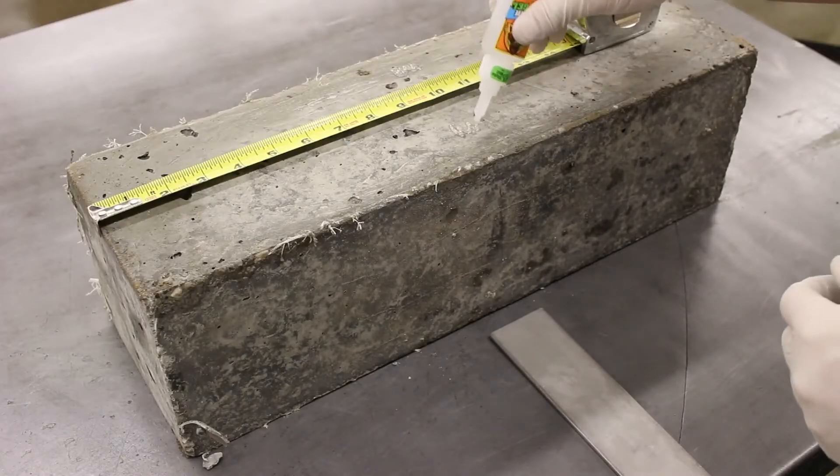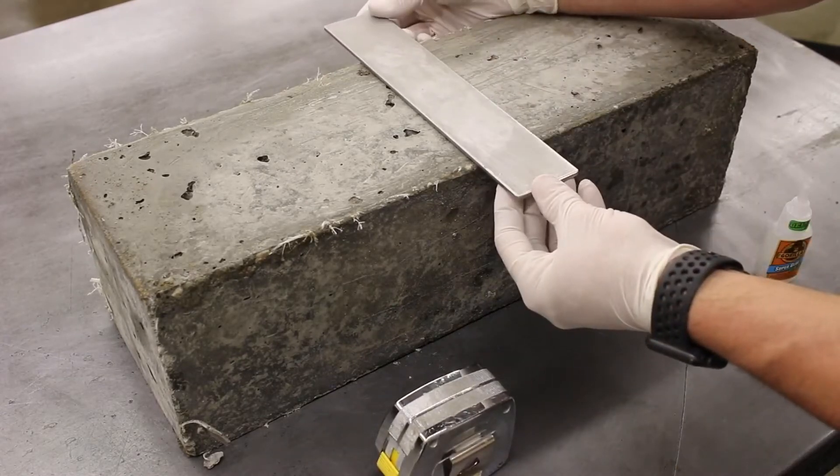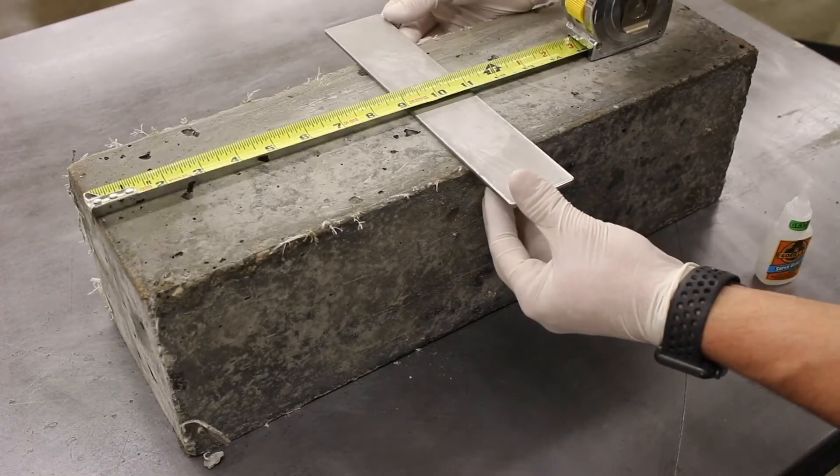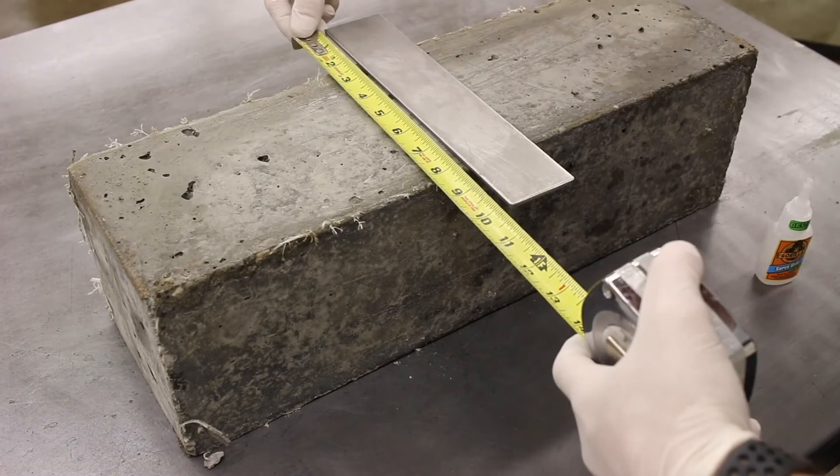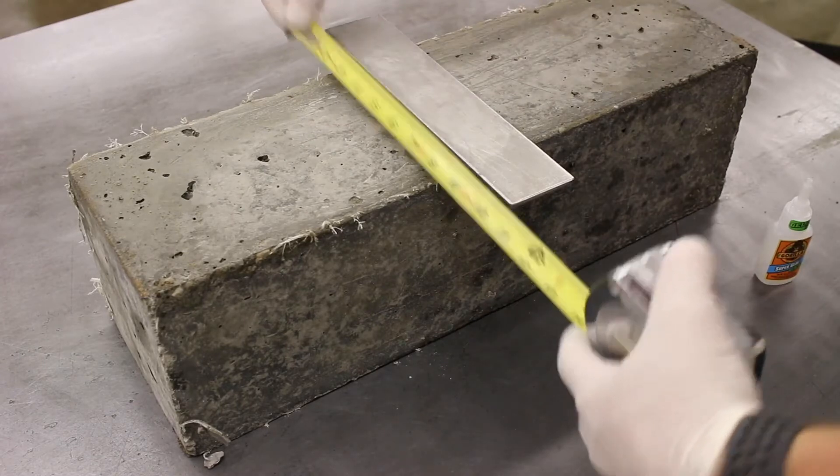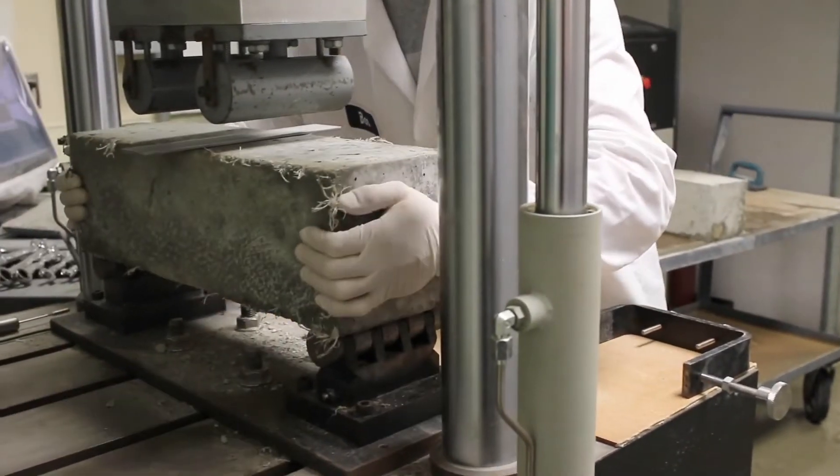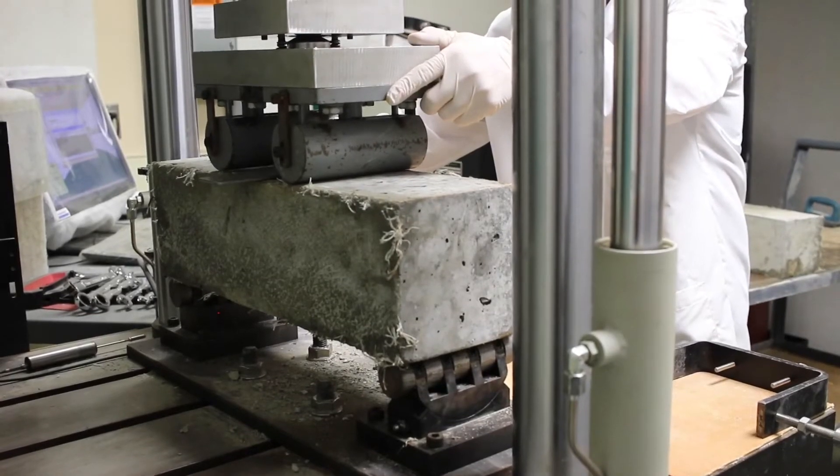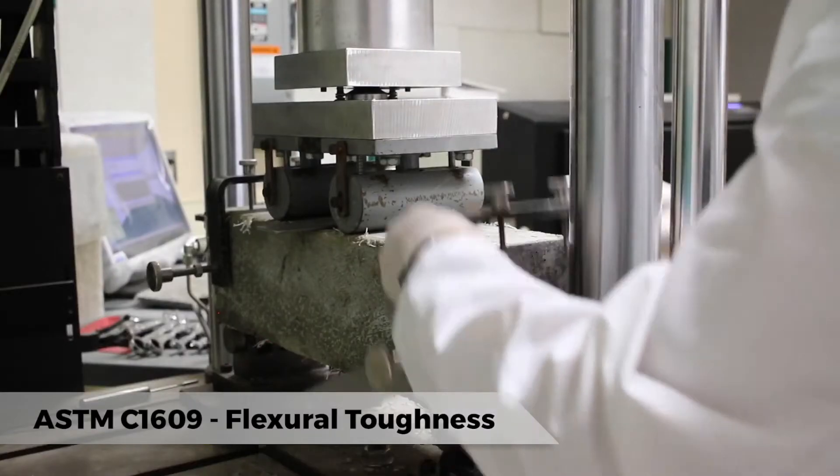ASTM C1609 is a test conducted on large flexural beams that measure the post-crack load-carrying capacity of concrete. This test must be conducted on a closed-loop, servo-controlled machine that uses the deflection of the beam to control the load and speed of the test.